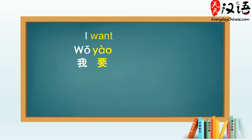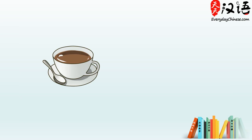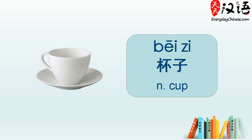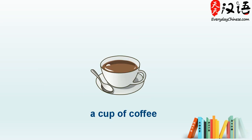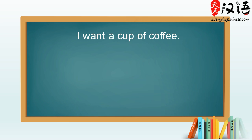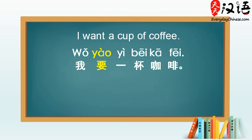Let's say that I want a cup of coffee. Coffee is directly translated from English to 咖啡. Sounds very similar to its English pronunciation, right? And the Chinese word for cup is 杯子. A cup of coffee is 一杯咖啡. Now say that I want a cup of coffee: 我要一杯咖啡.